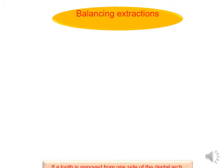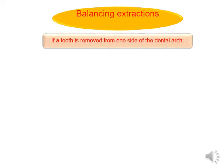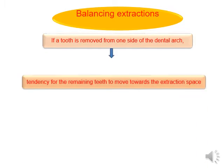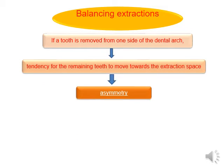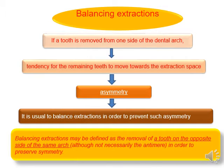Balancing extractions: if a tooth is removed from one side of the dental arch, the tendency for the remaining teeth to move toward the extraction space leads to asymmetry. So it is usual to balance the extraction in order to prevent such asymmetry. Balancing extraction can be defined as the removal of a tooth on the opposite side of the same arch in order to preserve symmetry.